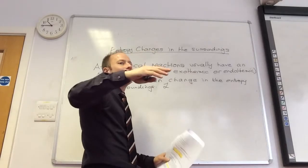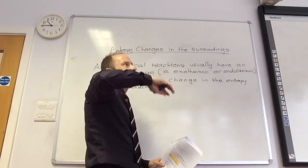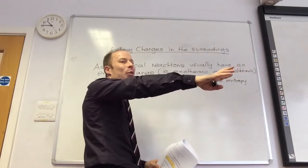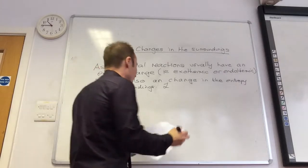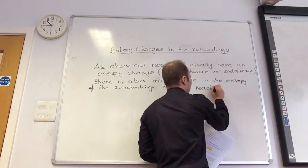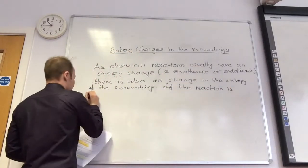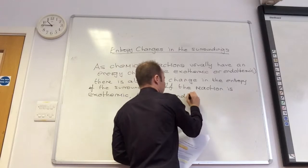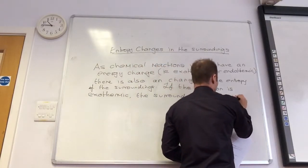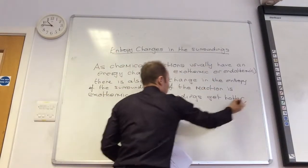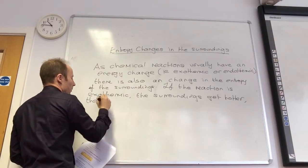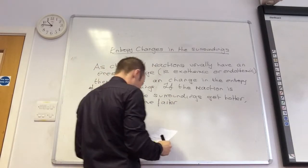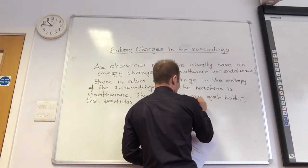Overall, if your reaction is becoming less disordered, then it must be highly exothermic to make the entropy of the surroundings become more disordered. It's a balance between the two. So if the reaction is exothermic, the surroundings get hotter and the particles become more disordered.